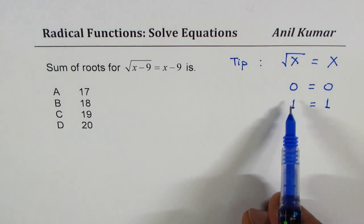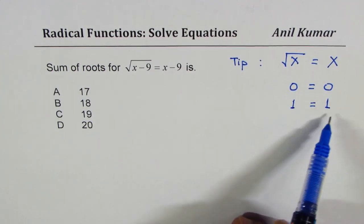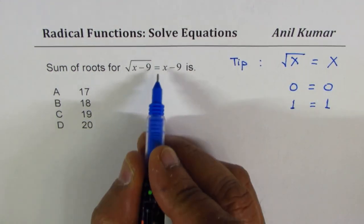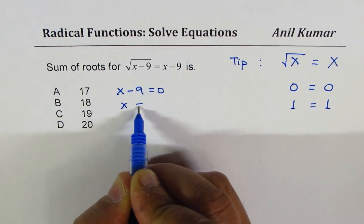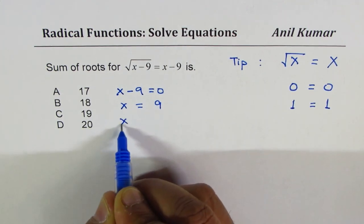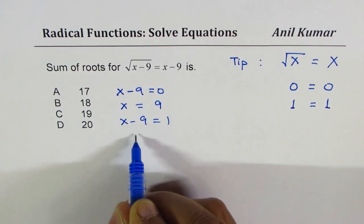Taking that into consideration, we could actually find the answer. x minus 9 is equal to 0 for x equals 9, and x minus 9 is equal to 1 for x equals 10.